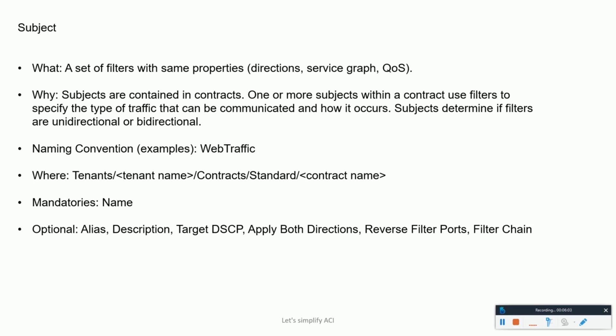Subjects can be unidirectional or bidirectional. A unidirectional filter is used in one direction — if there is a set of rules for ingress, those same rules are not the same for egress. For bidirectional filters, the filters are the same for both directions — they define both ingress and egress communications.